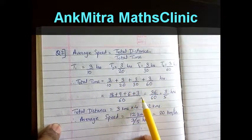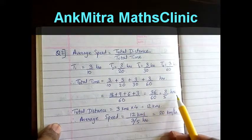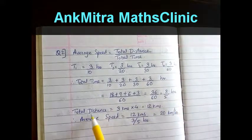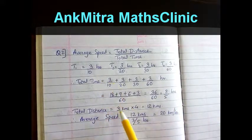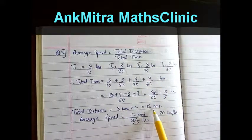This comes to 3 upon 5 hours, which is the total journey time. The total distance is 3 kilometers multiplied by 4 parts, so 3 multiplied by 4, which is 12 kilometers.